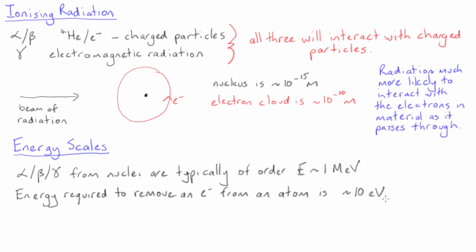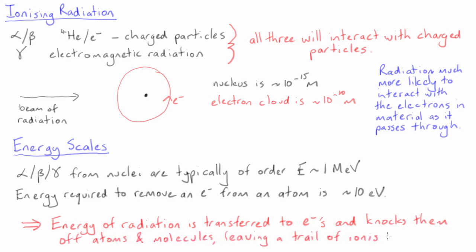The consequence of this huge difference in energy scale is that when the energy of the radiation is transferred to the electrons in materials, the electrons are knocked completely out of the atoms, leaving behind a trail of free electrons and ionised atoms. Higher energy radiation creates greater amounts of ionisation, and the radiation dose is quantified by the amount of energy deposited, or equivalently, the amount of ionisation created.